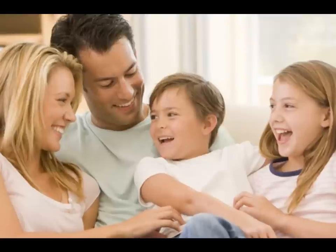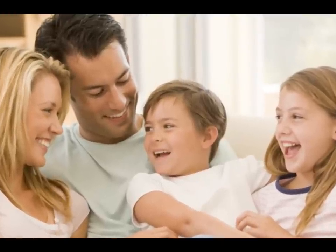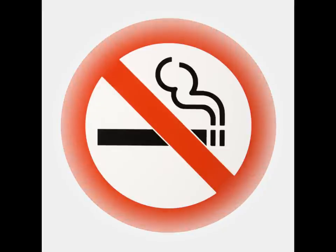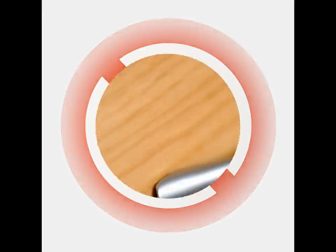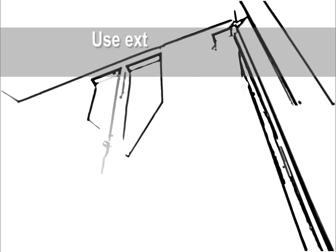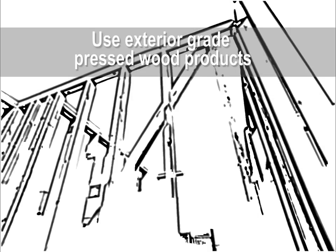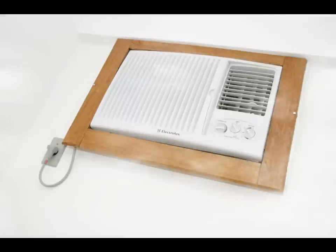Fortunately, there are steps people can take to reduce their exposure in their homes. Do not smoke indoors. Limit the introduction of formaldehyde containing products and building materials. Use exterior grade pressed wood products, which are lower emitting because they contain phenol resins, not urea resins.